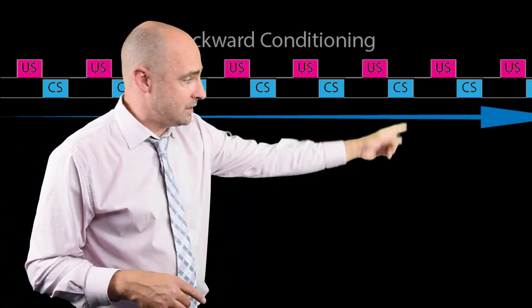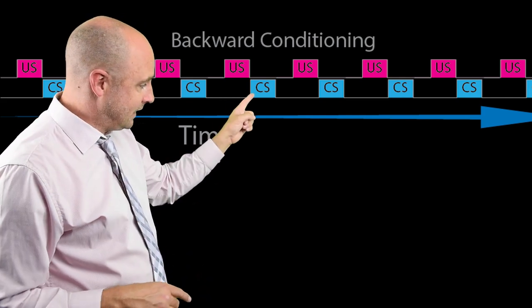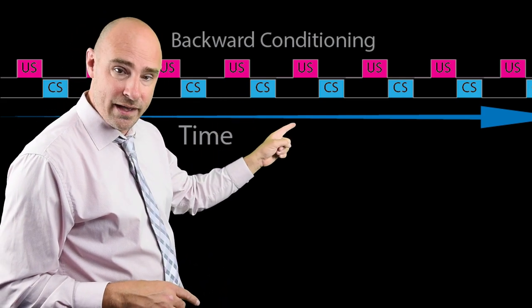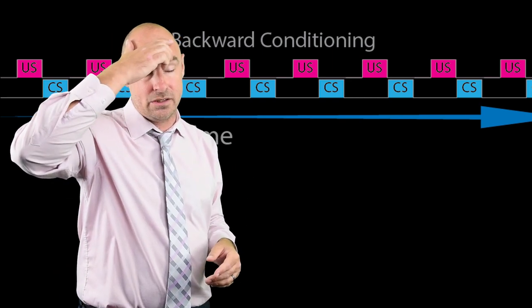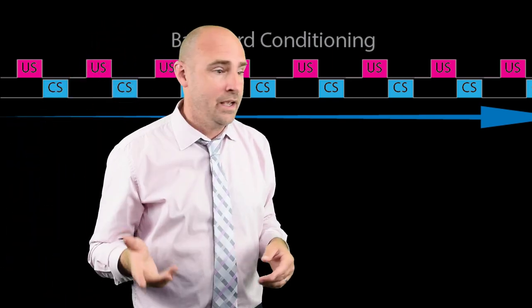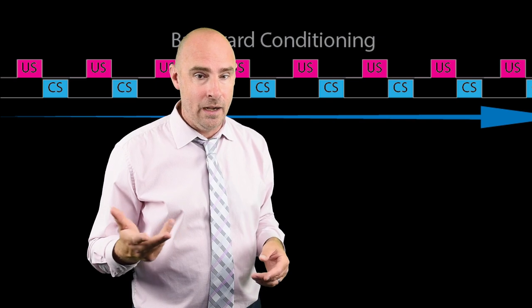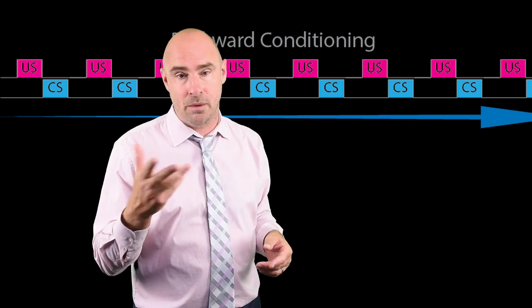USCS, USCS, USC... Wait a minute. That CS there is actually predicting that US there. So if you do them enough and you pack them close together, you might get conditioning, but you're not really getting backward conditioning. You're just getting trace conditioning because you screwed up your procedure.